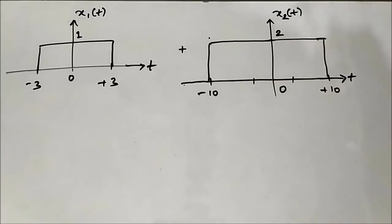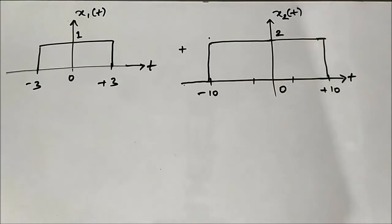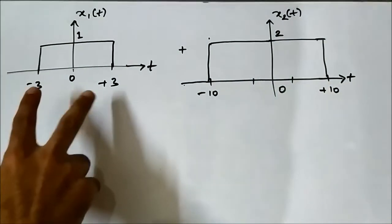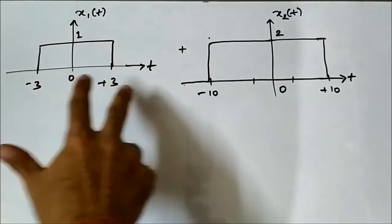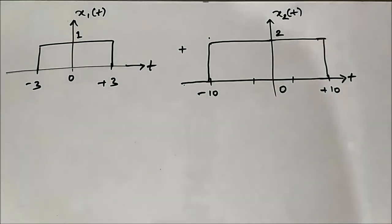Here we will perform signal addition and subtraction on two signals x1(t) and x2(t), which are basically rectangular pulse functions with different amplitudes. x1(t) has amplitude 1 and duration from minus 3 to plus 3, while x2(t) has amplitude 2 and duration from minus 10 to plus 10. We will perform both signal addition and subtraction, starting with signal addition.